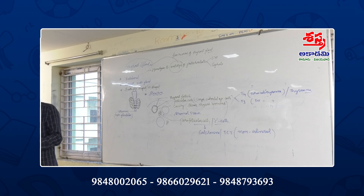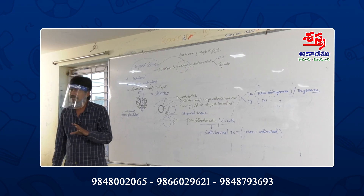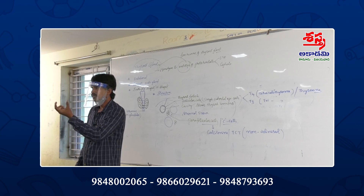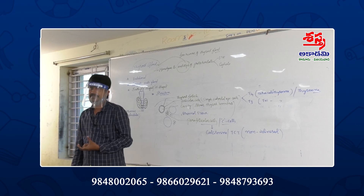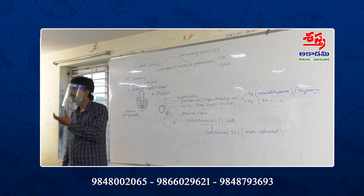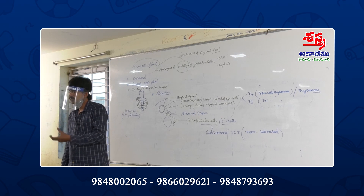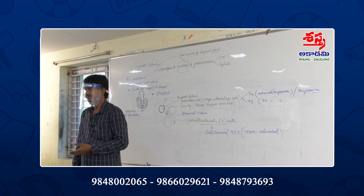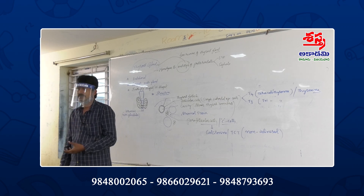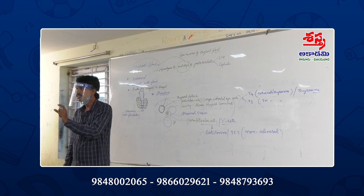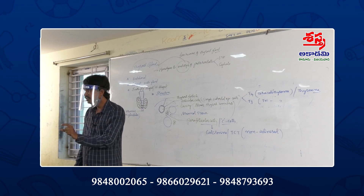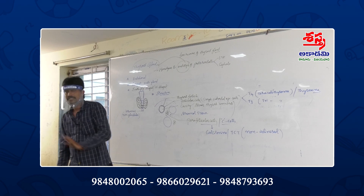Seafoods and onions are rich in iodine. Table salt is also iodized. So the main dietary sources of iodine are seafoods, onions, and table salt.